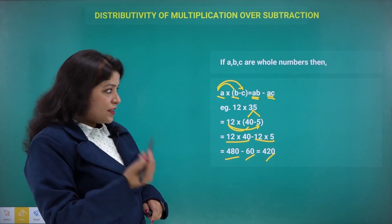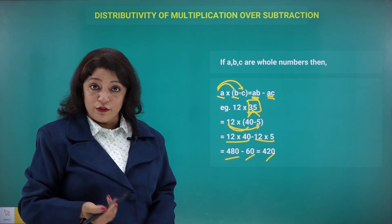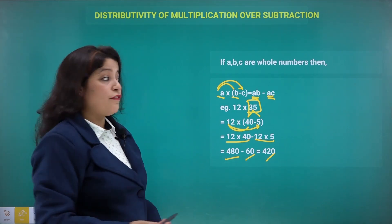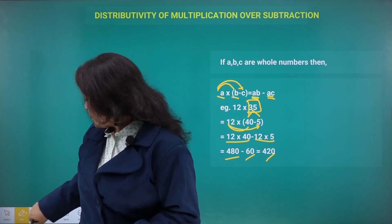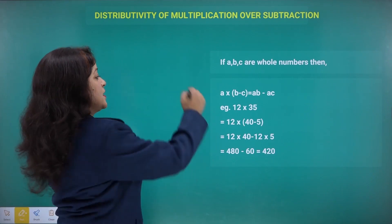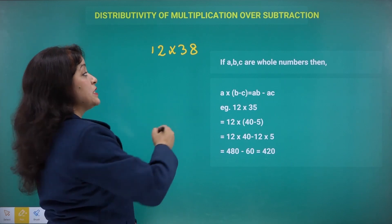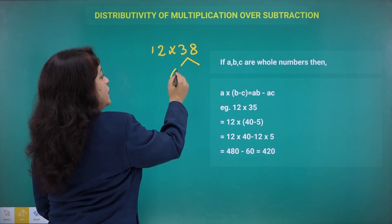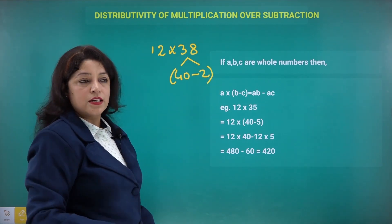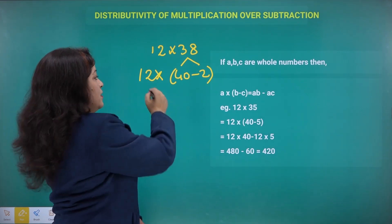So you can solve the same question using distributive property over addition or over subtraction. In this case, since 35 is equidistant from 30 and 40, we can add 5 or subtract 5. Suppose the number were 38 instead of 35 — then splitting as 40 minus 2 would be more beneficial.